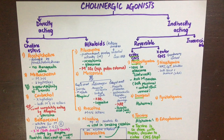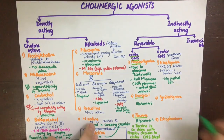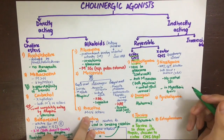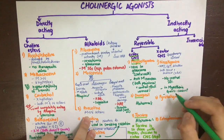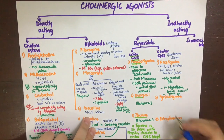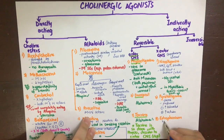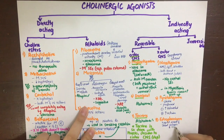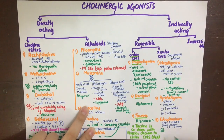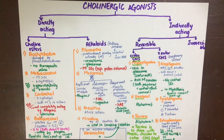Neostigmine has no central side effects, so it is mainly preferred over physostigmine in myasthenia gravis treatment. As it has major action on the NMJ, it will improve patient symptoms in myasthenia gravis. It is also used in curare poisoning (skeletal muscle relaxation) and in post-operative urinary retention and paralytic ileus. Pyridostigmine is similar to neostigmine but preferred due to its increased duration of action and better tolerability. Edrophonium has a rapid onset and very short duration of about 8–10 minutes, used diagnostically in the tensilon test.